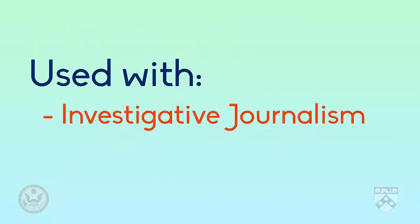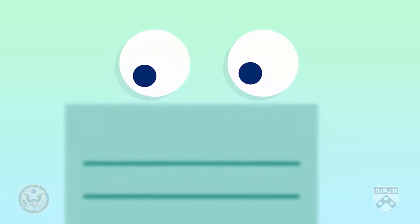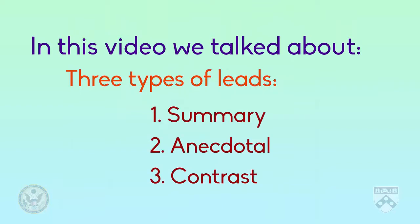A contrast lead, similar to an anecdotal lead, is generally not used with news stories, but is used with investigative journalism or human interest stories. As you can see, the first paragraph in an article is oftentimes the most important. It's the first paragraph that helps the reader decide whether or not to read the entire article. In this video, we talked about three types of leads: summary, anecdotal, and contrast. In the next video, we'll talk about the process of writing a lead.